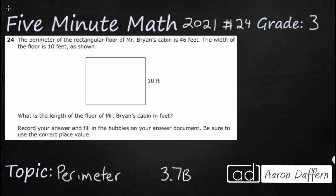Hello, and welcome to 5-Minute Math. Today we are looking at the third grade concept of perimeter. This is standard 3.7b in the great state of Texas, and we are using item number 24 of the 2021 released STAAR test.